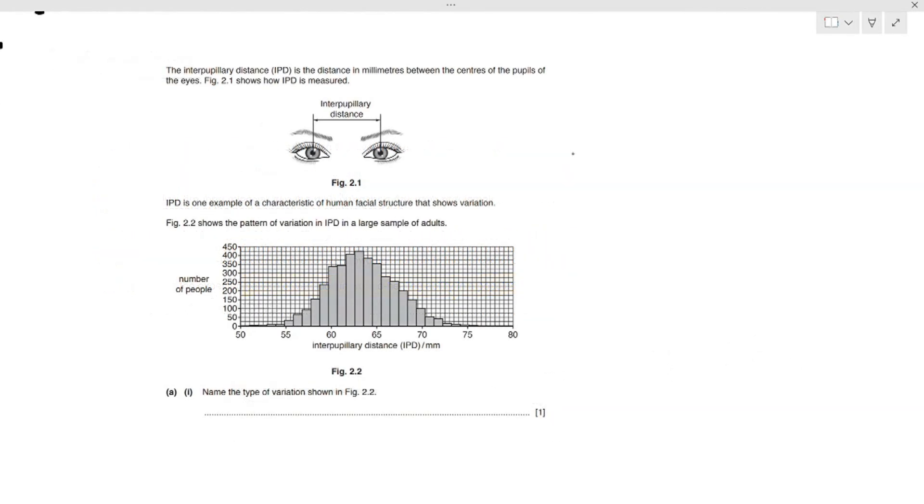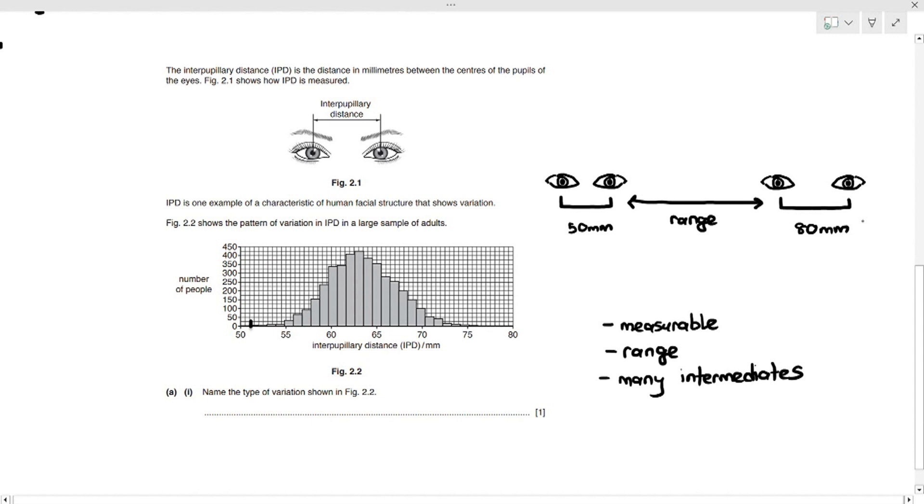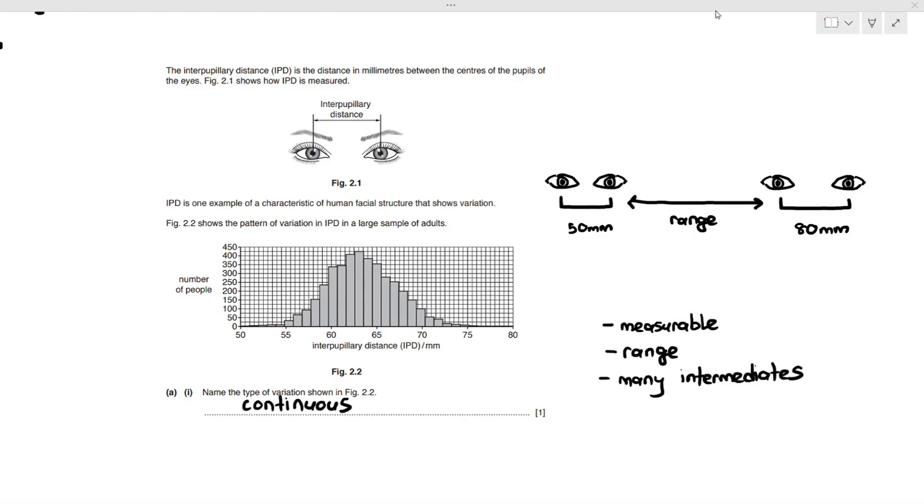In another case here, the interpupillary distance is the distance in millimeters between centers of the pupils of the eyes. Figure 2.1 shows how the IPD is measured or the interpupillary distance is measured. In this case, there's variation. You have people who have 50 millimeters IPD and you have people who have 80 millimeters IPD. It's quite far apart. But there are also people who exist in between. There are people who are at 55, 60, 65, 70, 75. That means that there are many intermediates. So, right off the bat, it's measurable, it's in a range, it's many intermediates. We know that this is continuous variation.